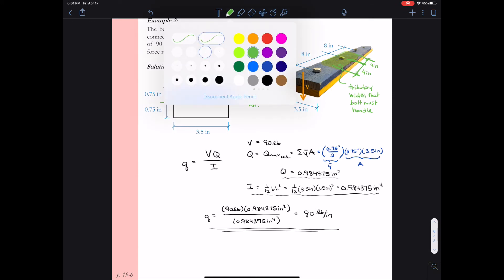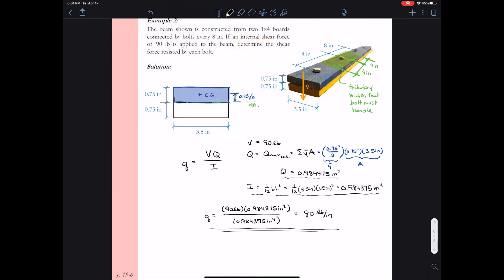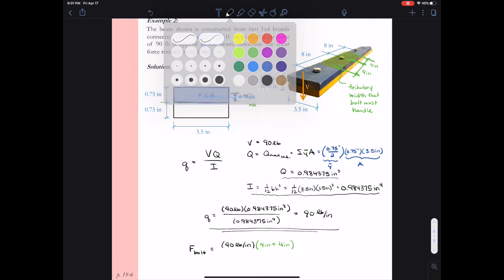So now we're ready to write an expression for the shear force each bolt is going to have to handle. So I'll call that F bolt. So each bolt needs to handle 90 pounds per inch. And then the bolt in question handles a total of 8 inches. 4 inches to the forward side, 4 inches backwards. So a total of 8 inches of width.